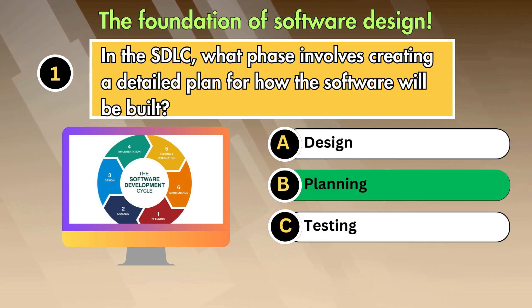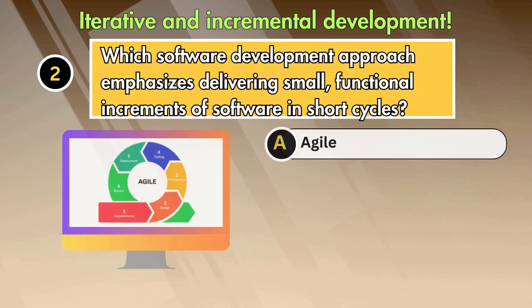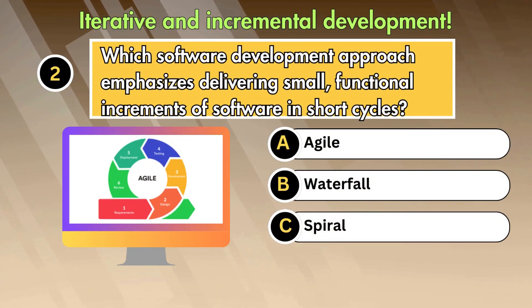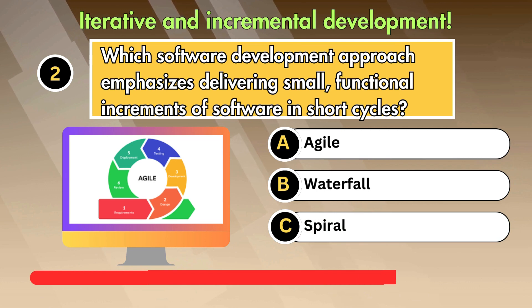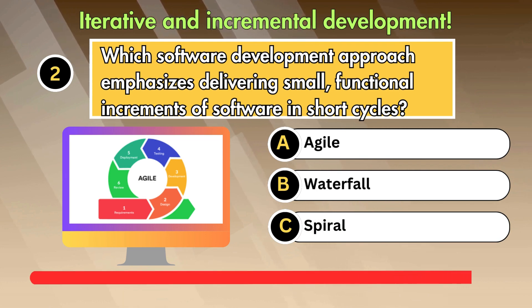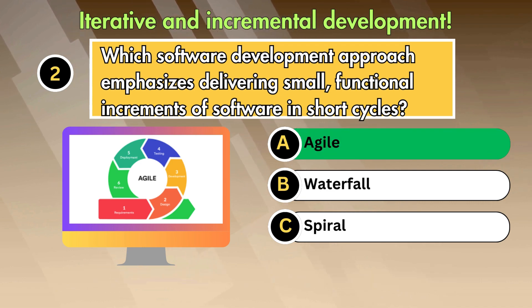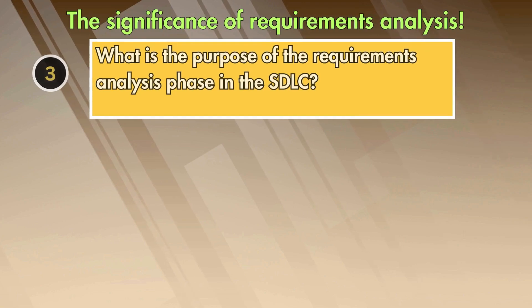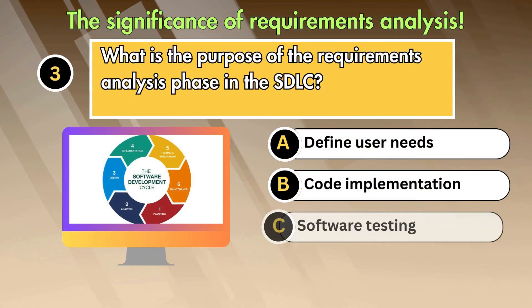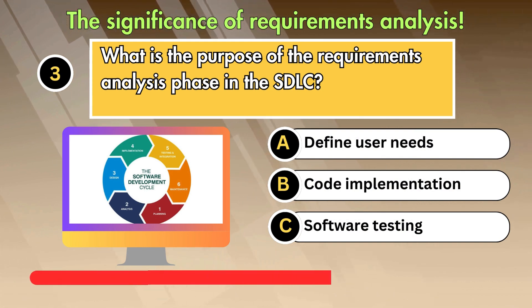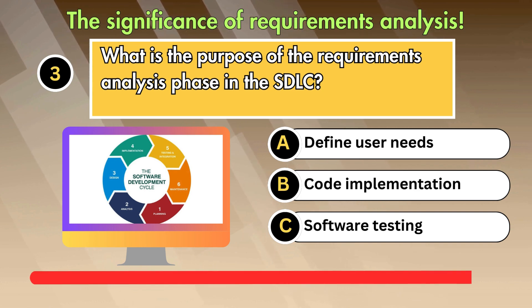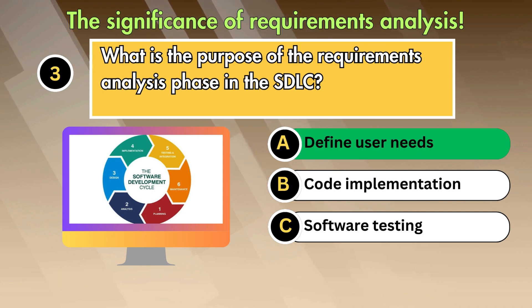Answer is Planning. Which software development approach emphasizes delivering small functional increments of software in short cycles? Option 1: Agile. Option 2: Waterfall. Option 3: Spiral. Answer is Agile. What is the purpose of the requirements analysis phase in the SDLC? Option 1: Define user needs. Option 2: Code implementation. Option 3: Software testing. Answer is Define user needs.